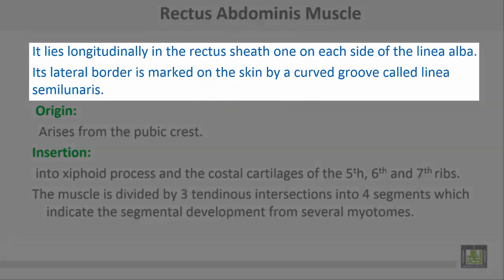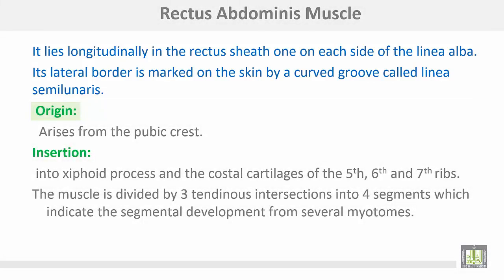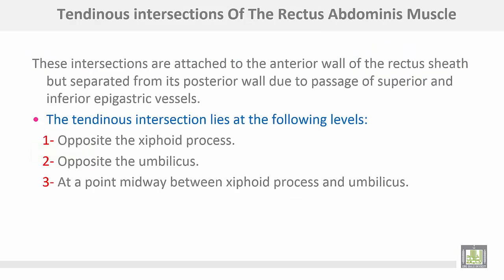The rectus abdominis muscle lies longitudinally inside the rectus sheath, one on each side of the linea alba. Its lateral border is marked on the skin by a curved groove called the linea semilunaris. It takes origin from the pubic crest and is inserted into the xiphoid process of the sternum and the costal cartilages number 5th, 6th, and 7th. The muscle is divided by three tendinous intersections into four segments, indicating segmental development from several myotomes.